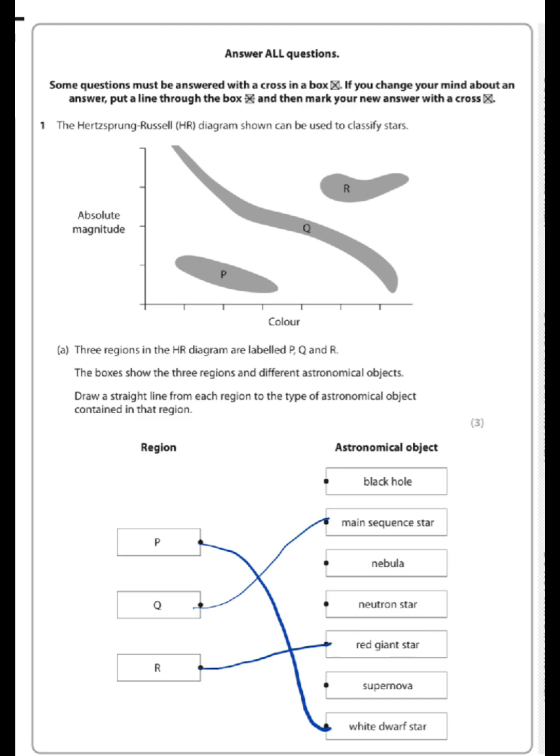Then we are asked to define the absolute magnitude of a star. There's two things you need to include here. You can see that from the fact there are two marks given here. The first thing is it is a measure of brightness.